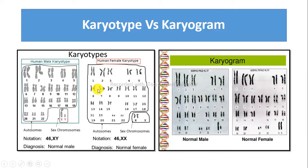Karyotype describes the number and appearance of chromosomes and includes their length, banding pattern and centromere position. Whereas karyogram contains chromosomes arranged in an appropriate order.